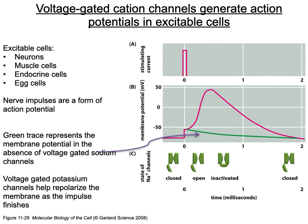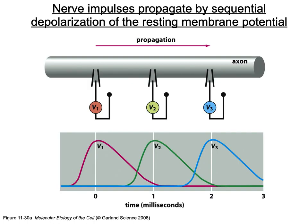Multiple patch clamps along an axon can measure depolarization occurring along its length. The time measured is in milliseconds — not visually detectable, but measurable through computer software. They can detect the time difference between depolarization at the first clamp versus the second versus the third clamp.